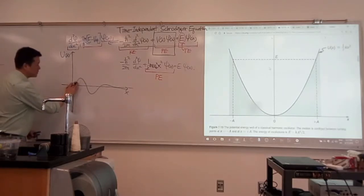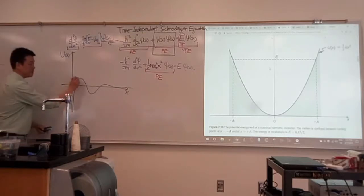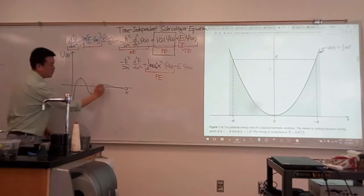Alright, so let's find some stable equilibrium positions. There are equilibriums—this is an equilibrium point, this is an equilibrium point, this is equilibrium, this is another equilibrium.